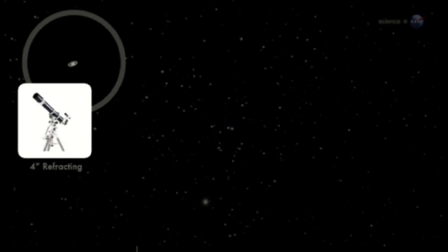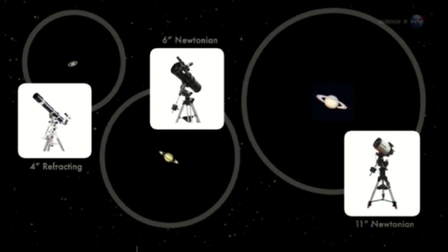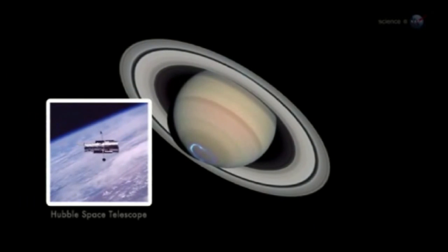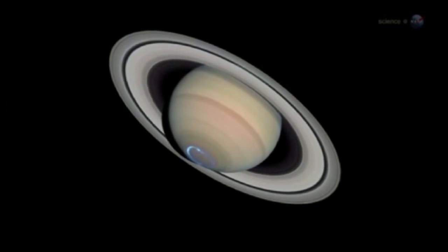Observers who see Saturn for the first time through the eyepiece of a telescope often gasp. The view is Hubble-esque, but the experience is much more personal. You're seeing Saturn with your own eyes, a celestial wonder right out of the pages of an astronomy magazine. The sight of that cloudy sphere, suspended in the middle of crisp, thin, icy rings, is almost unreal.